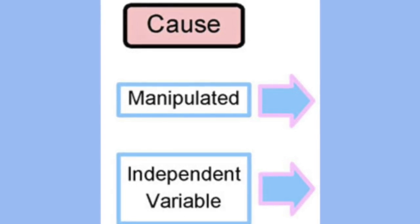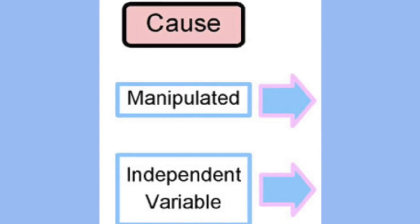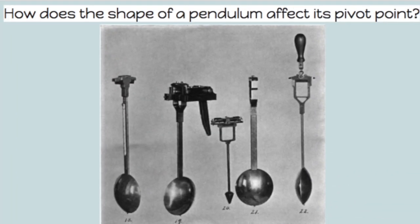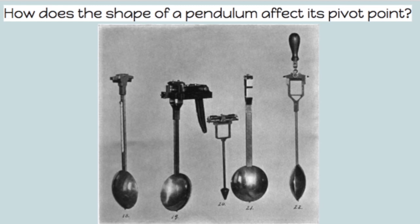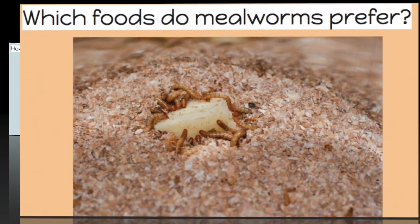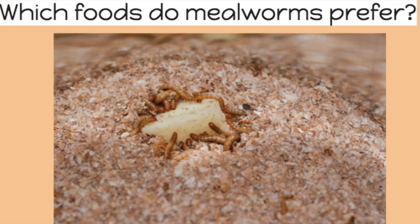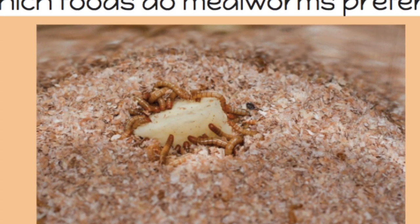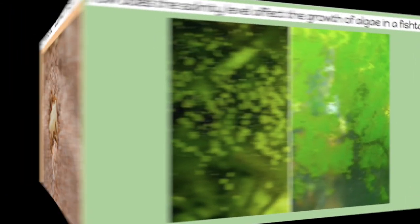The independent variable, also known as the manipulated variable, is the variable that causes a change in the dependent variable. The independent variable for the pendulum question would be the different shapes of pendulums tested. For the mealworm question it would be the different types of food tested, and for the algae in a fish tank question it is the different levels of salinity.